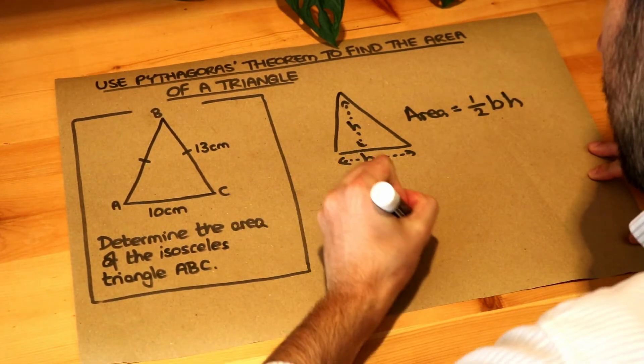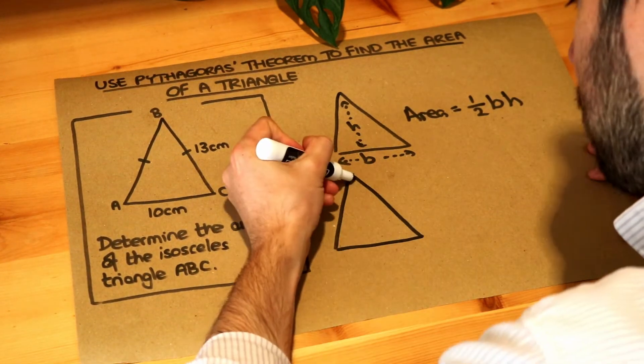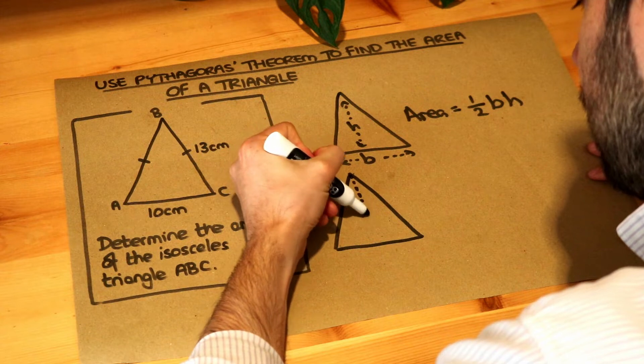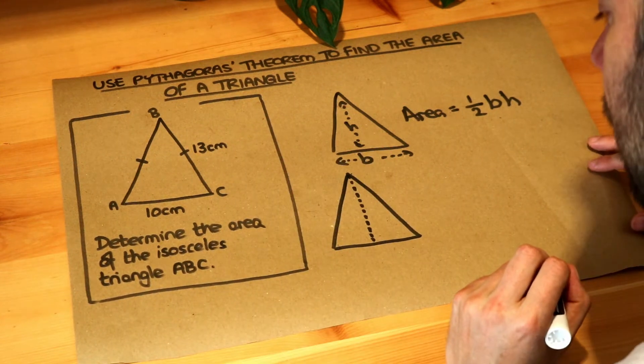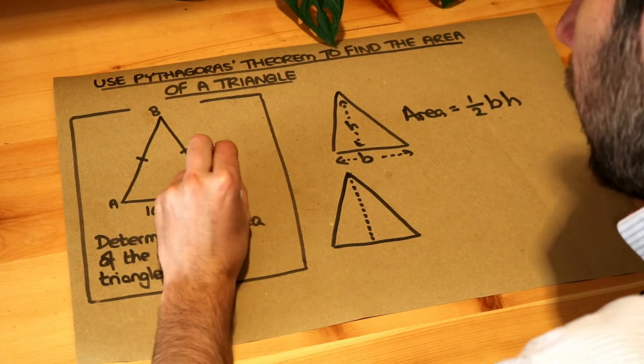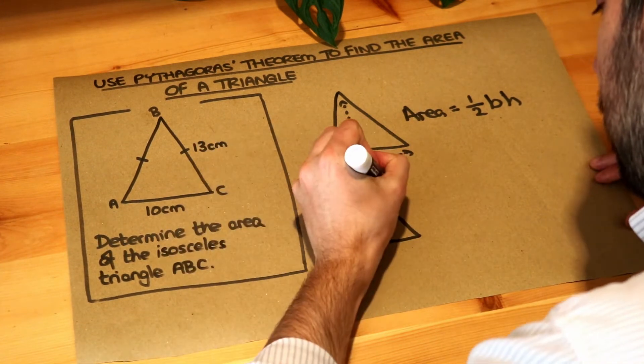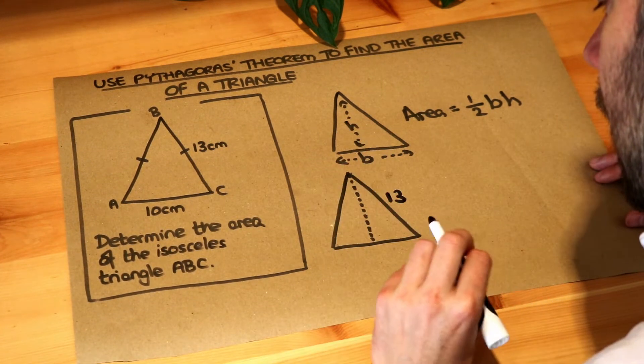Let's draw out this triangle again and put the height down it. We need to work out that length. What do we know? We know that length is 13, and if you think about it,